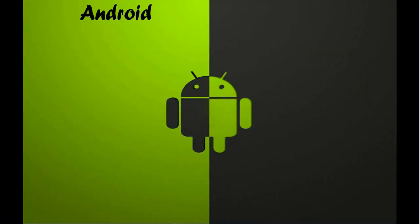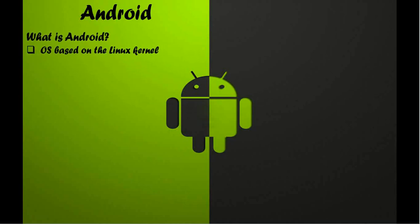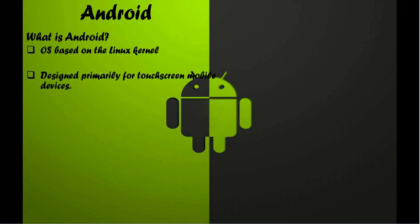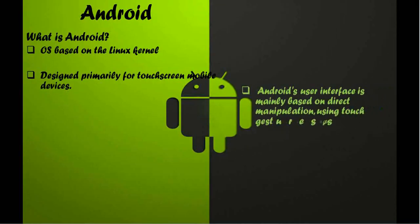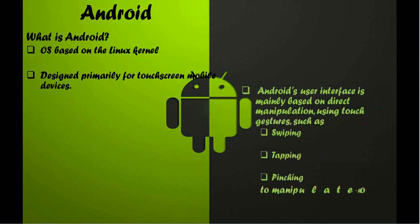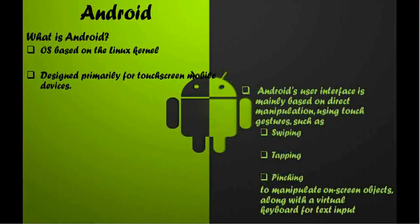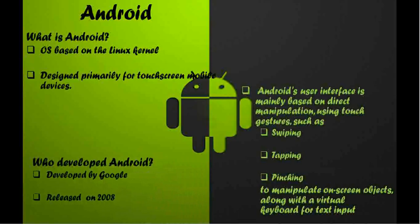Now let's have an overview of Android. What is Android? Android is an OS based on the Linux kernel. It is designed primarily for touchscreen mobile devices. Android's user interface is mainly based on direct manipulation using touch gestures such as swiping, tapping, and pinching, used to manipulate on-screen objects, along with a virtual keyboard for text input. It is developed by Google and released in 2008.